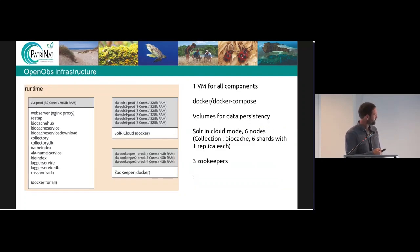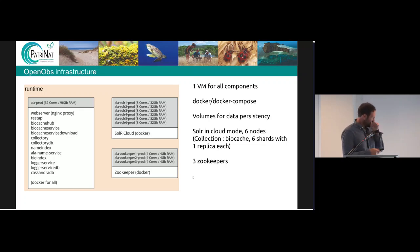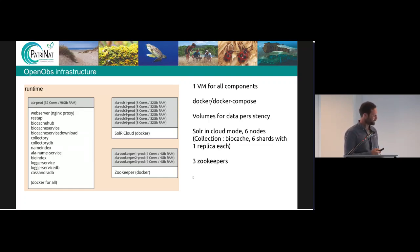For infrastructure, we have mainly one virtual machine that has all the services running as Docker containers, with one Docker Compose file to link them so they can communicate, and volumes for data persistency. We have Solr in cloud mode with six nodes — the collection we display is the Biocache — with six shards with one replica each and three ZooKeepers as well.